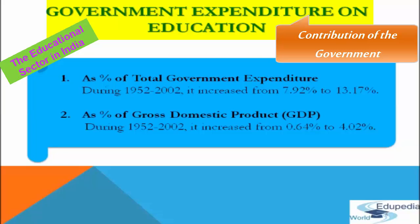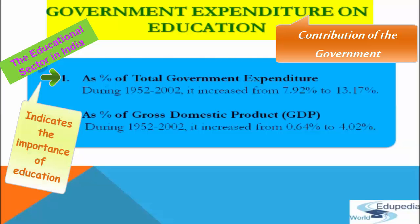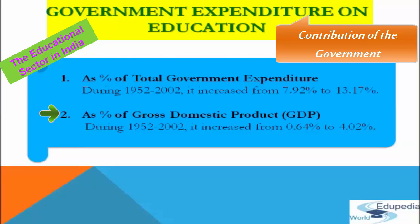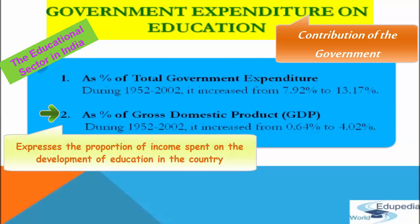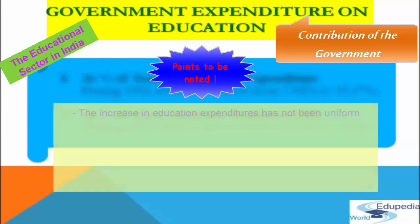Growth in government expenditure on education: the expenditure by the government on education is expressed in two ways. First, as a percentage of total government expenditure — it indicates the importance of education before the government. During 1952 to 2002, it increased from 7.92% to 13.17%. The second way is as a percentage of GDP, which expresses the proportion of income spent on development of education in the country.